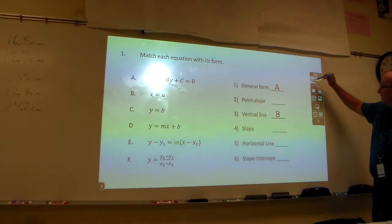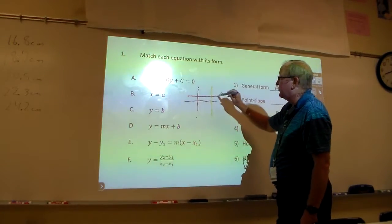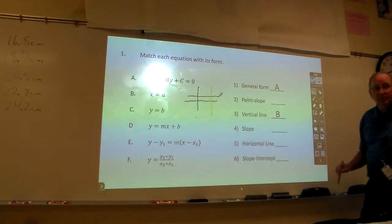So, what then would be Y equals B? A horizontal. And so, when Y equals B might be, when it equals B, it looks like that, which is a what? Horizontal line, right?